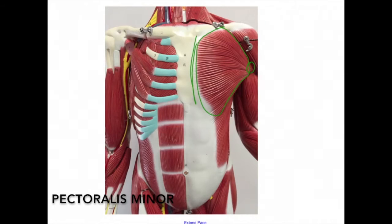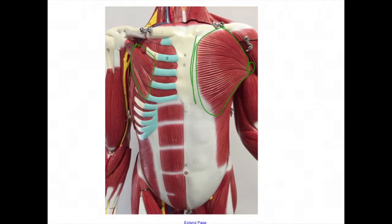Underneath the pectoralis major is the pectoralis minor, located here. The origin is at ribs three, four, and five. The insertion is the coracoid process of the scapula. The action is to depress the shoulder by drawing the scapula downward.